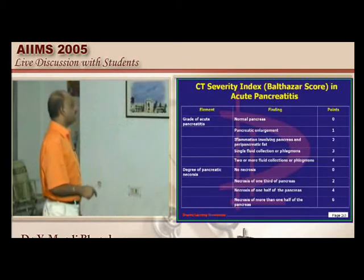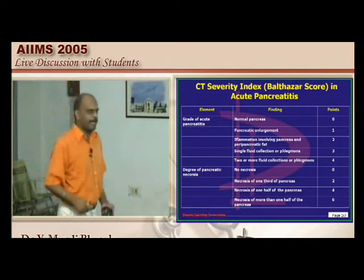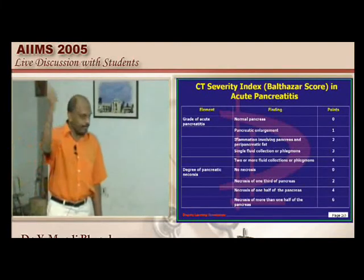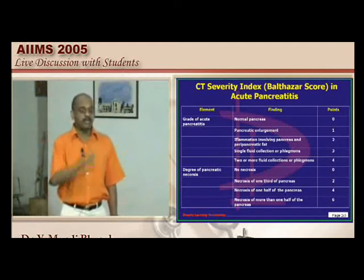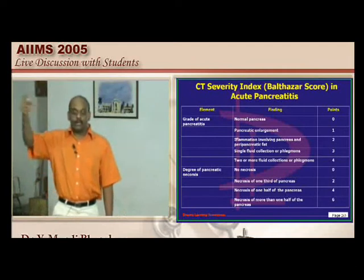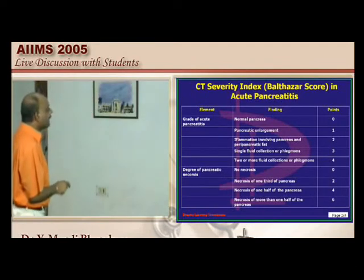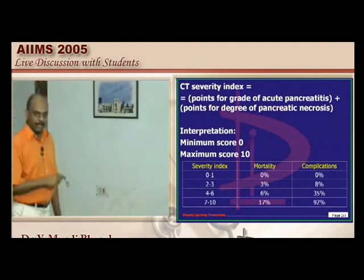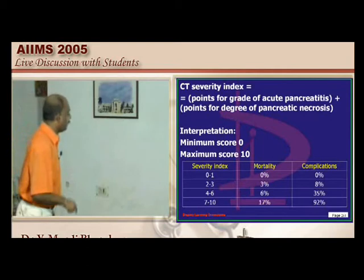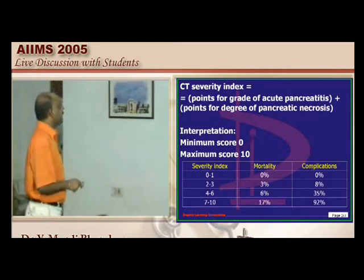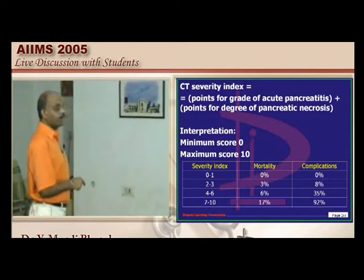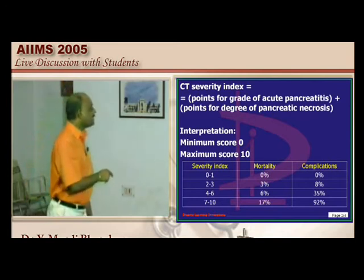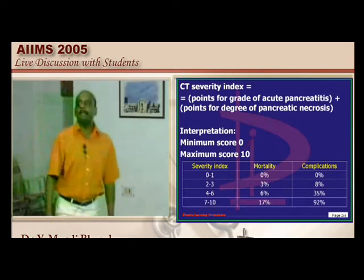The CT severity index (Balthazar's score) grades pancreatitis by CT findings — normal pancreas, pancreatic enlargement, peripancreatic inflammation, single fluid collection, and multiple fluid collections — plus degree of pancreatic necrosis. A CT score of 4–6 means 6% mortality; 7–10 means 17% mortality. A CT score greater than 6 indicates severe acute pancreatitis.